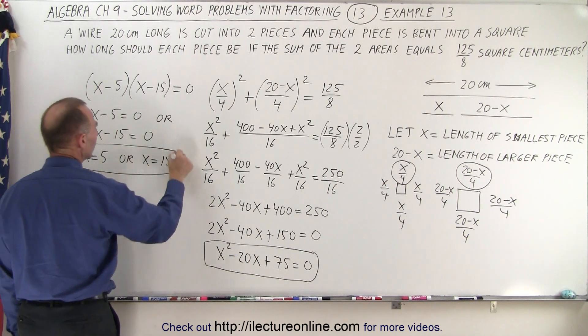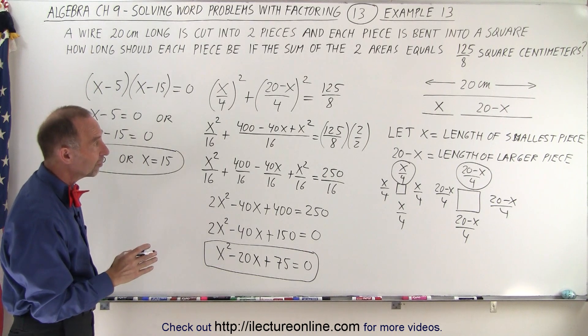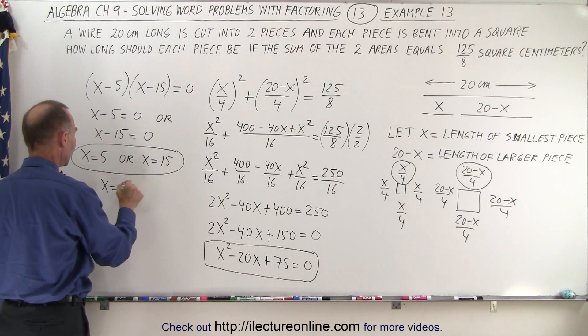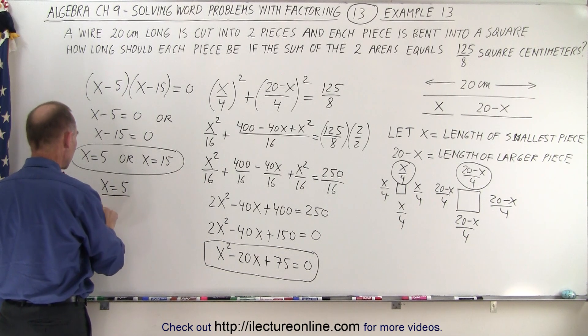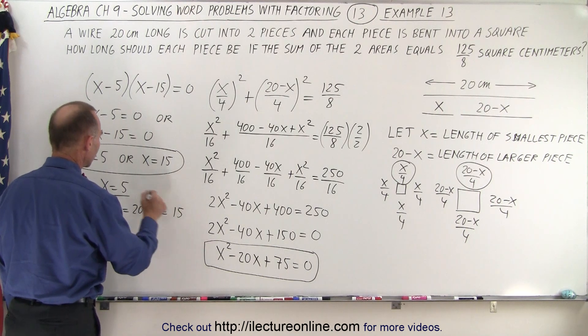Now notice, since x represented the smallest of the two pieces, therefore we'll take the small number x equals 5, which means that 20 minus x is equal to 20 minus 5, which is equal to 15.